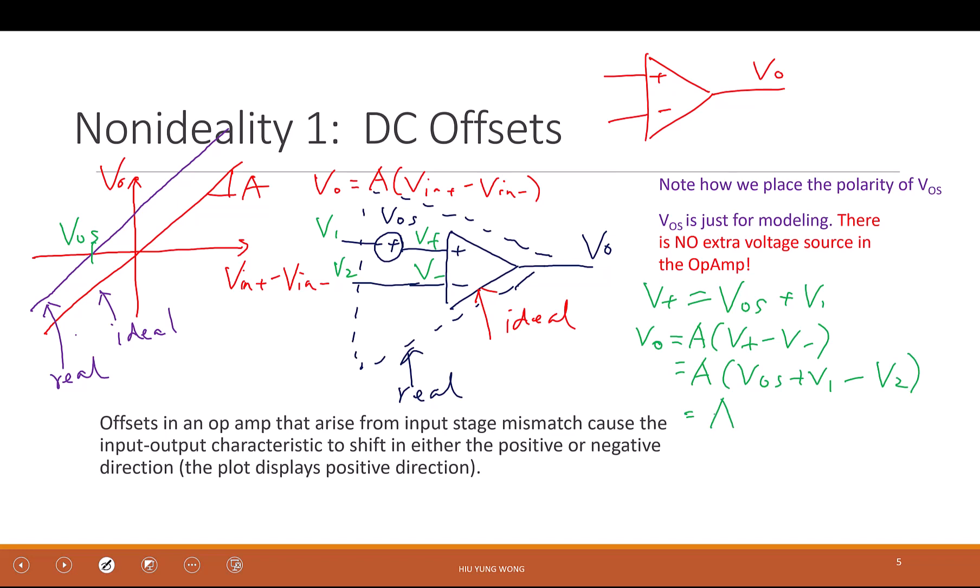So as a result, due to this non-ideality, my op-amp equation is A(V1 - V2 + VOS). So in order to get V_out equal to zero, I need to apply V1 minus V2 equals to negative VOS. If this is negative VOS, then it will cancel the VOS, and then my output is zero. So actually, I should put this as negative VOS instead of VOS.